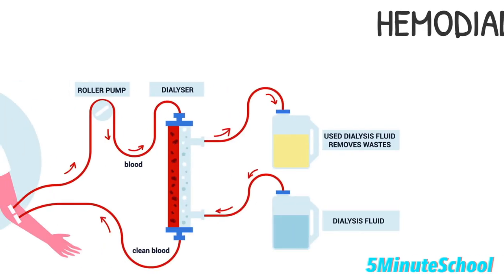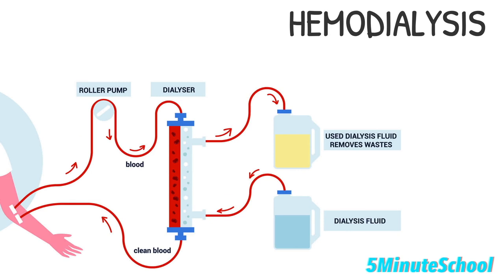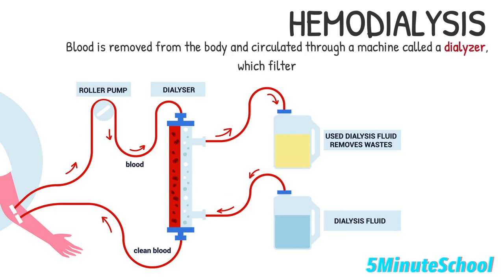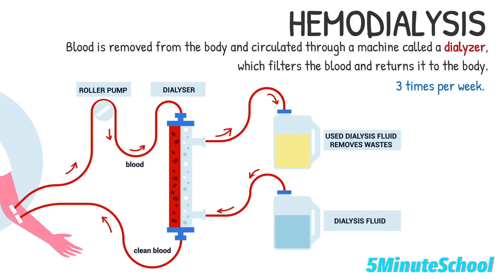In hemodialysis, blood is removed from the body and circulated through a machine called a dialyzer, which filters the blood and returns it to the body. Hemodialysis is usually performed three times a week for three to four hours per session in a hospital or dialysis center.